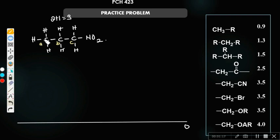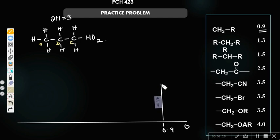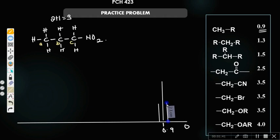A is a CH3 group, which is around 0.9. So A has three protons and you are going to have a signal around 0.9 — it's going to be very high because it's due to three protons. The number of protons most of the time determines how intense the signal will be.